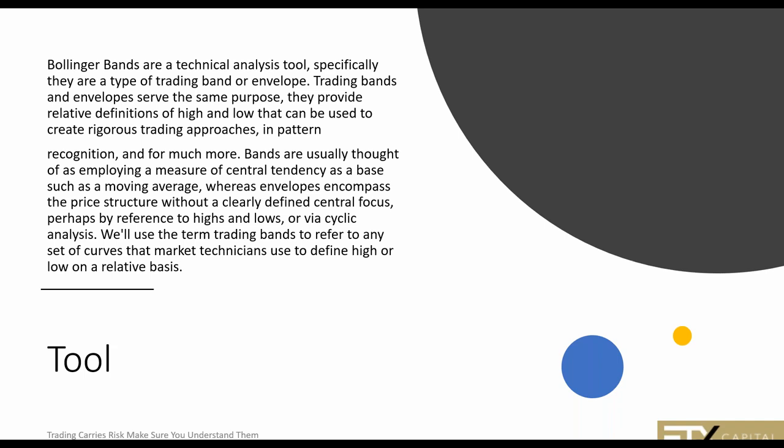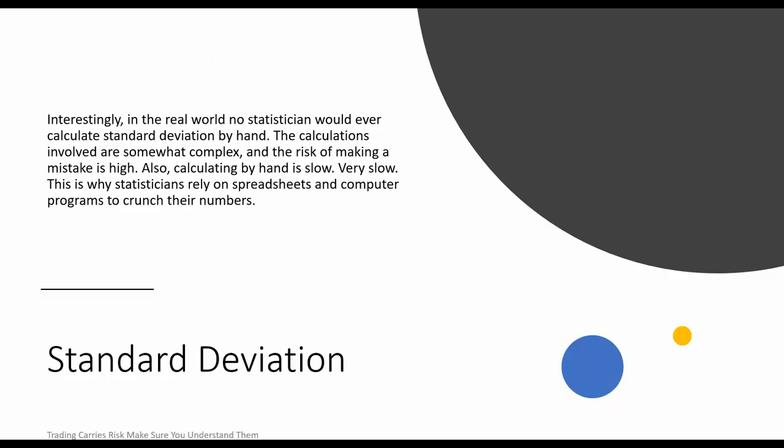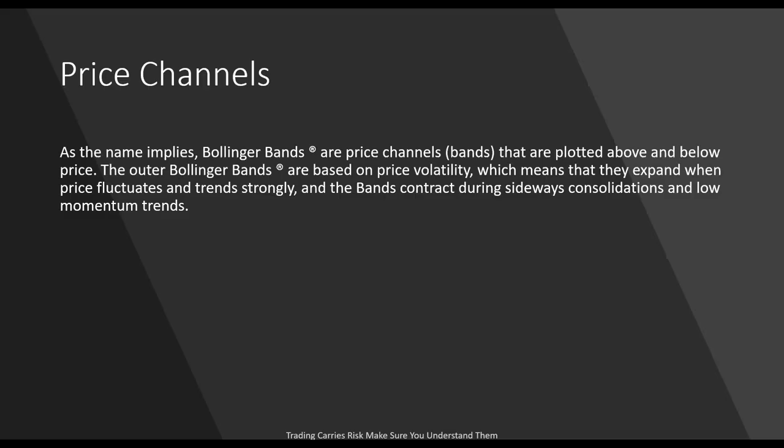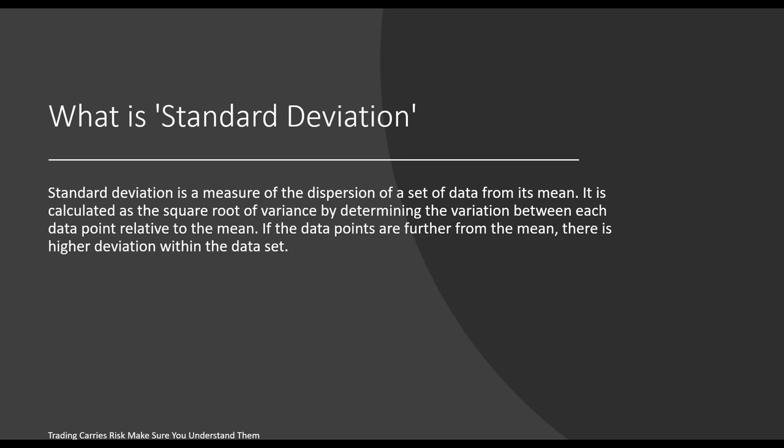Bollinger Bands are a technical analysis tool — specifically, they are a type of trading band or envelope. Bollinger Bands use a calculation of minus two and plus two standard deviations. No statistician would ever calculate standard deviation by hand — it's very complex and slow. Standard deviation is a measure of the dispersion of a set of data from its mean.